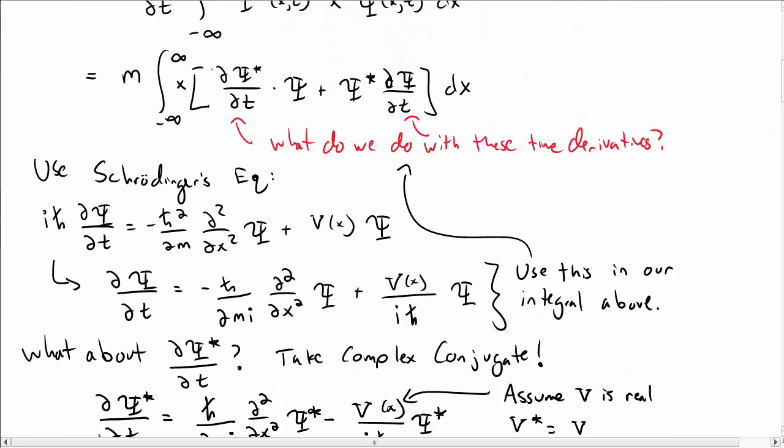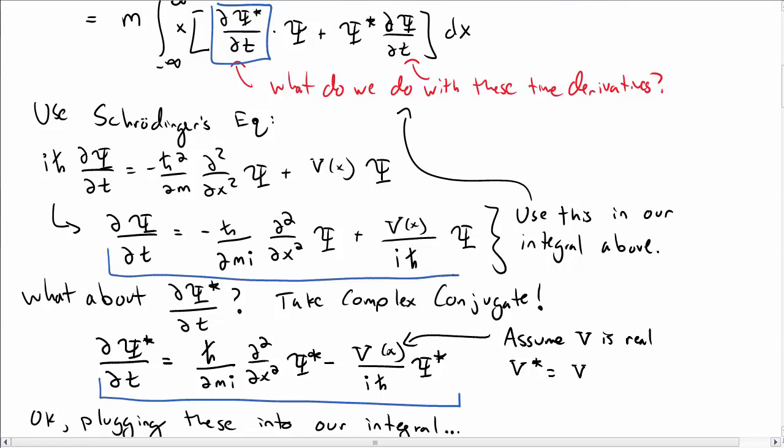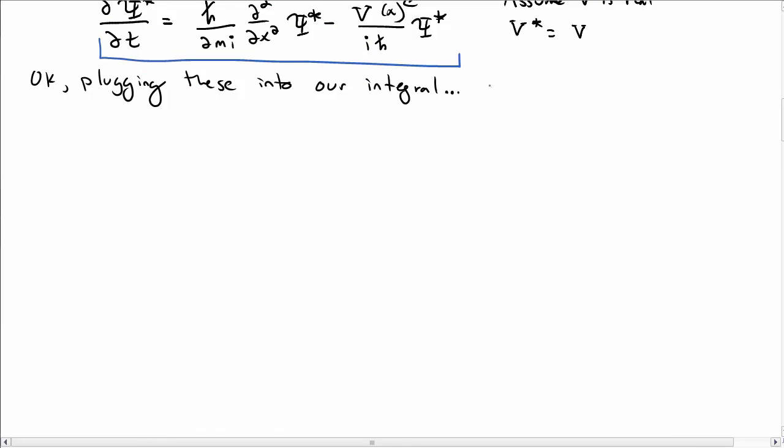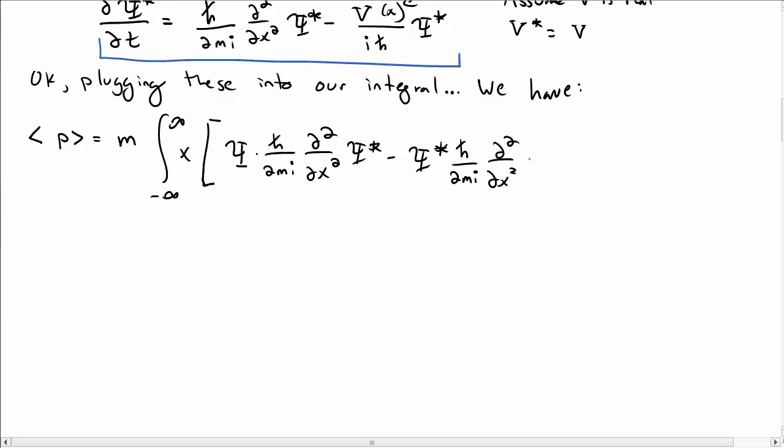Now we're going to use these to replace in the integral expression that we had above for the expectation value of the momentum. Taking this and plugging it in, we get a mess. But after some of the dust clears, we find m times the integral, there's still an x out front, I get psi h bar over 2mi the second derivative of psi star, minus the same thing where I switch psi and psi star, integral of that dx. By the way, the terms involving v of x, the potential, will cancel.